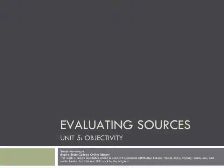I'm Sarah Morehouse from the Empire State College Online Library. This is the fifth unit in our series of videos about evaluating information sources for research and everyday life. In this unit, we talk about objectivity: what it is, why it's important, how to decide if an information source is objective or not, and what to do about it.